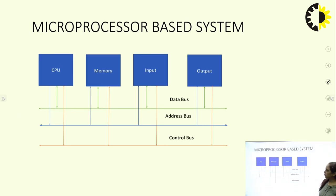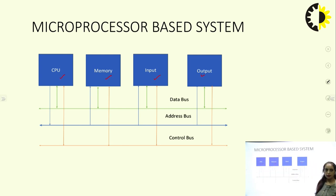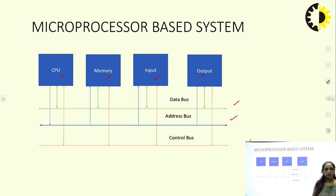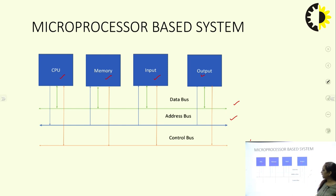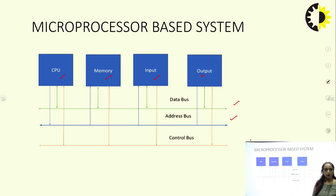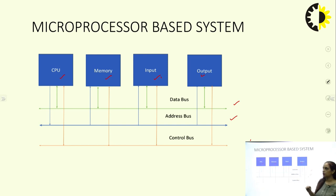This is the basic microprocessor-based system. We have the CPU, memory, and IO devices. Three types of buses are used in any microprocessor: the data bus, the address bus, and the control bus. The data bus is bidirectional because data will be transmitted from CPU to memory or from processor to IO devices. Address buses are unidirectional, and control buses are also bidirectional — covering whether we want to write data or take input from devices and display output.